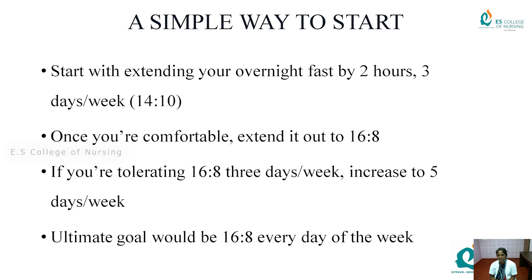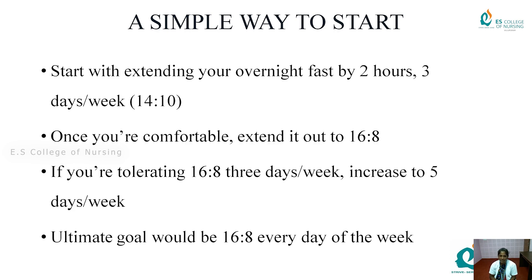Here are some simple ways to start fasting. Start by extending your overnight fast by 2 hours, 3 days per week — for example, a 14:10 ratio, fasting 14 hours and eating within 10 hours. Once you are comfortable, extend it to the 16:8 method. If you are tolerating 16:8 for 3 days a week, increase to 5 days a week. The ultimate goal would be 16:8 every day of the week.